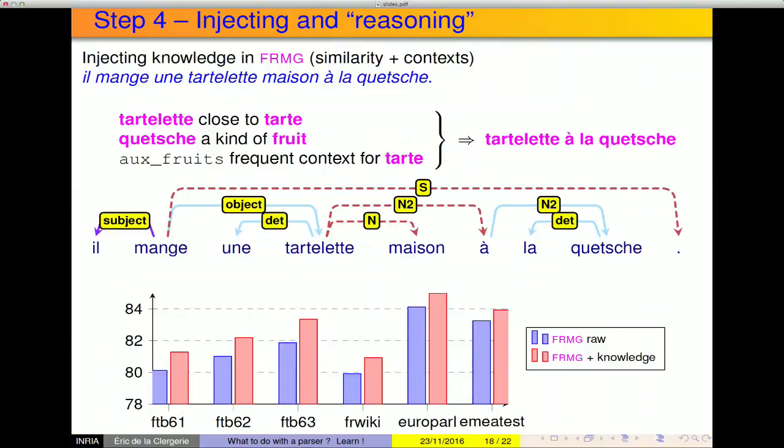Step 4 is that we can inject and reason from the extracted knowledge. Here is an example: to perform disambiguation of 'une manche de tartelette maison à la quetsche' — 'à la quetsche' could be attached to 'maison', 'tartelette', or 'manger'. We arrive at a reasoning using similarity and the most pertinent contexts: 'tartelette' is close to 'tarte' in the network; 'quetsche' is close to 'fruits' in the network; 'aux fruits' is a frequent context for 'tarte'. Therefore, 'tartelette à la quetsche' seems reasonable. Evaluations on corpus show that when we inject the acquired knowledge (shown in red), there is a systematic improvement in performance.